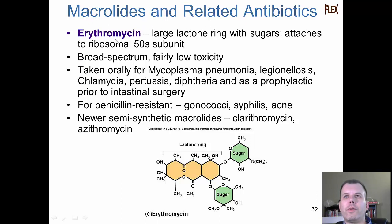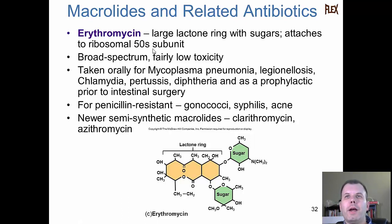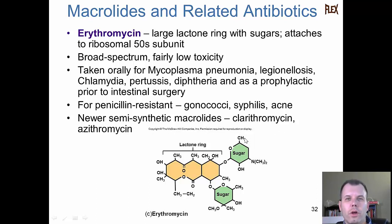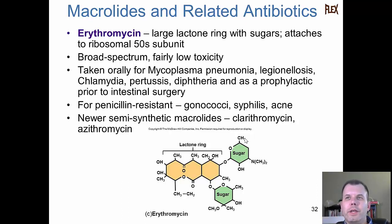The macrolides are antibiotics like erythromycin. These block and attach to the 50S, often preventing the clamping of the two ribosomal subunits together. They have a broad spectrum and low toxicity, so they're used for a lot of different infections. Some are used for penicillin-resistant bacteria like syphilis, gonococci, and acne. There are also newer semi-synthetic derivatives like azithromycin and clarithromycin. These might be some of the newer ones we turn to as we find resistance with penicillins and other things.